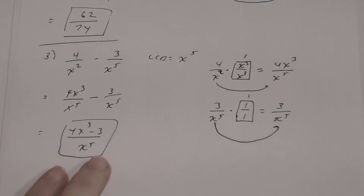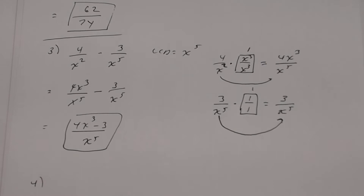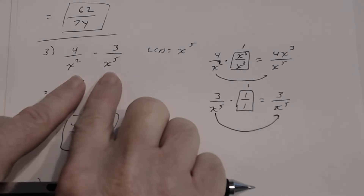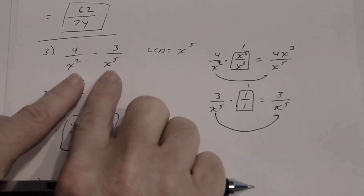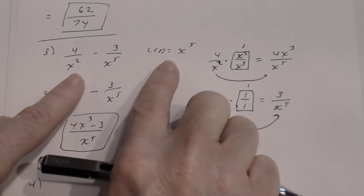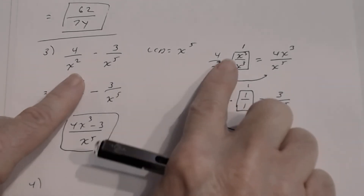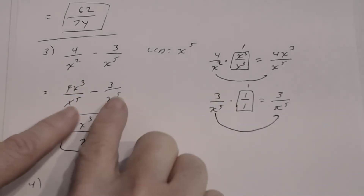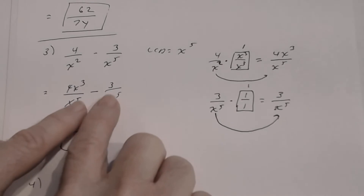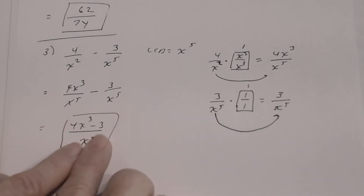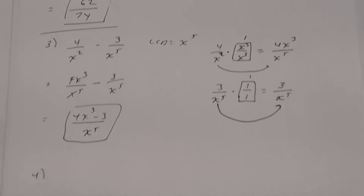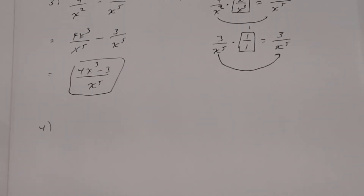Before problem 4, here's the process summary: first find the LCD, then write equivalent fractions, then combine into one rational expression (since they now share a denominator), then simplify if possible.